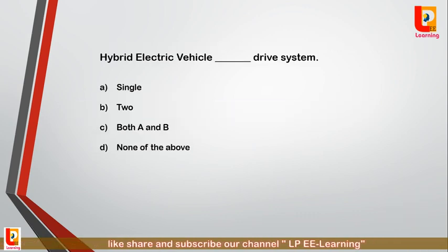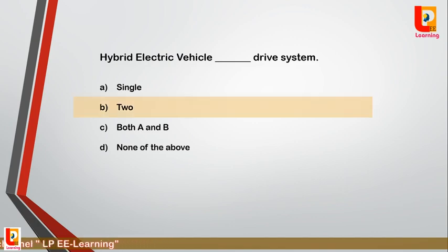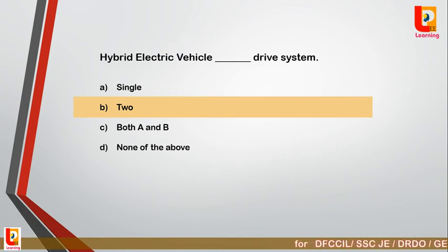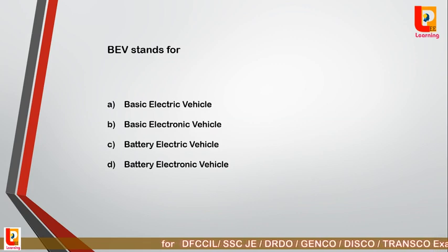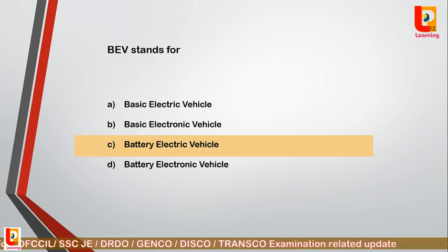Question 19: A hybrid electrical vehicle has which type of drive system — option A: single drive system; option B: two drive system; option C: both A and B; option D: none of the above? Correct answer is option B: two drive system. Hybrid electrical vehicles are a two drive system. Question 20: BEV stands for? Correct answer is option C: battery electrical vehicle is the abbreviation of BEV.